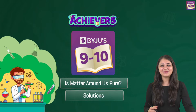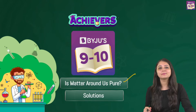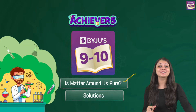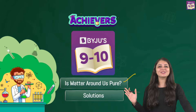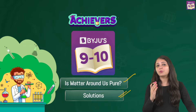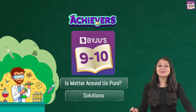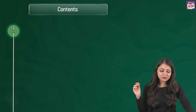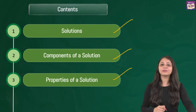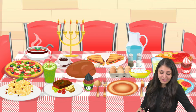Hi achievers and welcome back to your favorite channel. We were discussing the chapter 'Matter Around Us Pure.' We know that matter around us is not completely pure — we have many mixtures, both homogeneous and heterogeneous. Today's agenda is to talk about solutions first, then the components of a solution, and finally the properties of a solution.